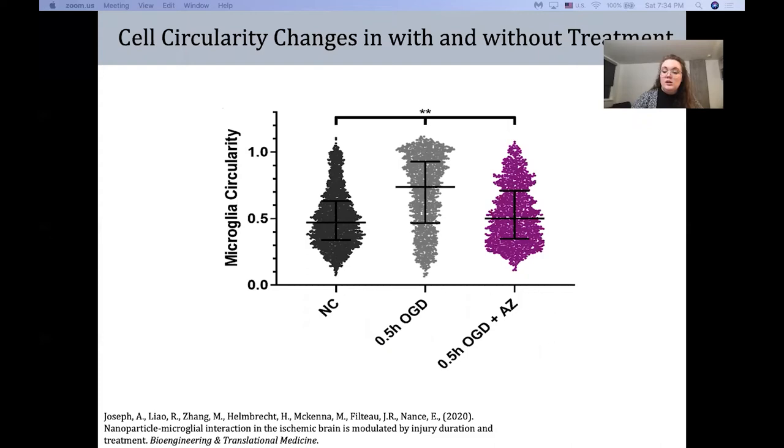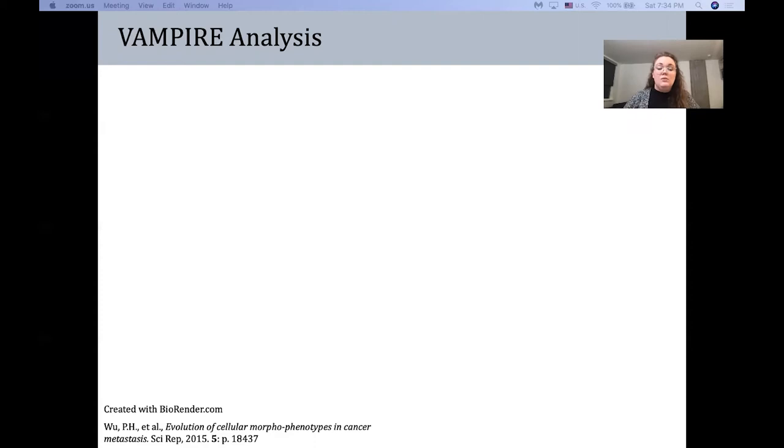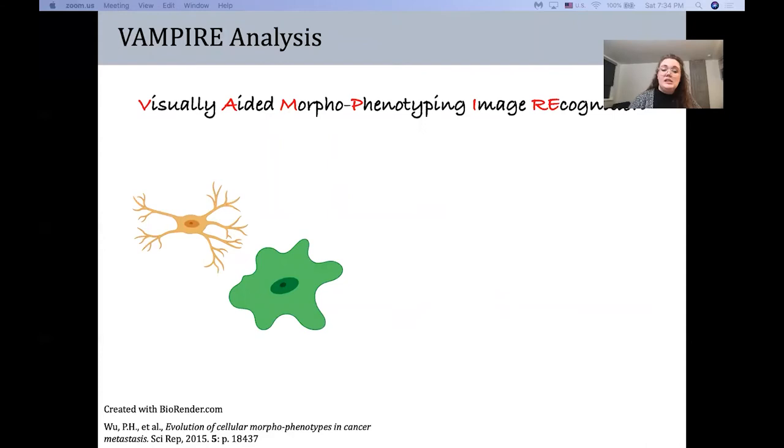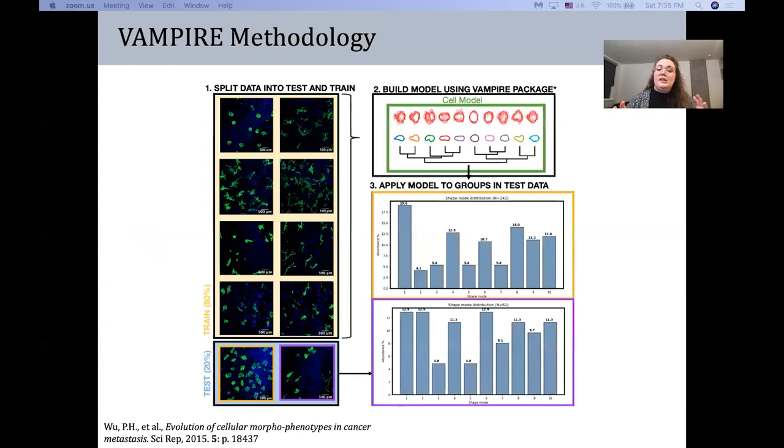Alongside these quantitative cell shape features, we actually perform VAMPIRE analysis, visually aided morphophenotyping image recognition, a package from the Dennis Wirtz group at Johns Hopkins, which allows us to take images of ourselves and create representative phenotypes of their outlines. So we can upload all of our data and split it into testing and training groups and create these dendograms of representative shape features.